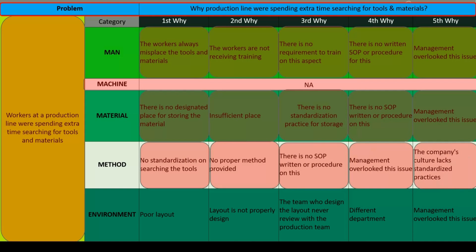Under Environment — First why: why are workers spending extra time? Poor layout. Second why: why poor layout? The layout is not properly designed. Third why: why not properly designed? The team who designed the layout never reviewed it with the production team. Fourth why: why no review? Layout is handled by a different department. Fifth why: why does that cause this issue? Management overlooked this issue.